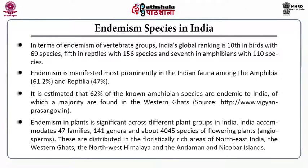Endemism in plants is significant across different plant groups in India. India accommodates 47 families, 141 genera and about 4,045 species of flowering plants — mainly angiosperms. These are distributed in the floristically rich areas of Northeast India, the Western Ghats, Northwest Himalayas, and the Andaman and Nicobar Islands.